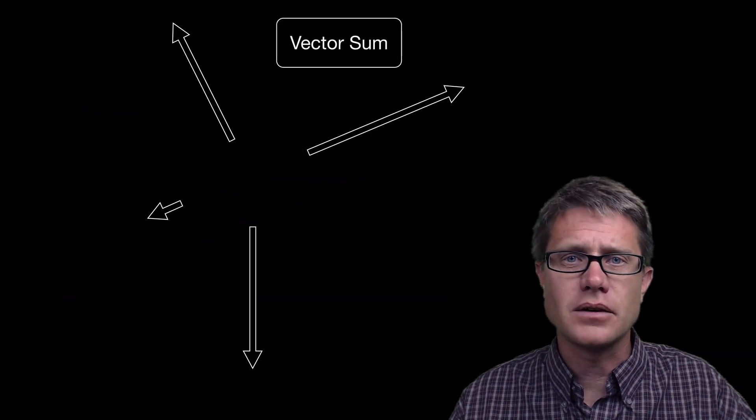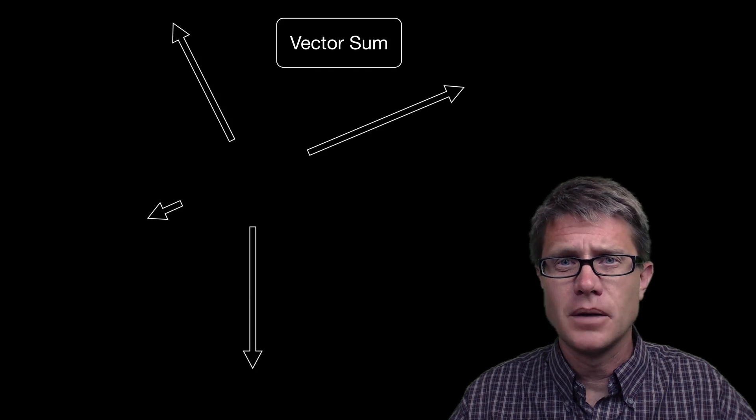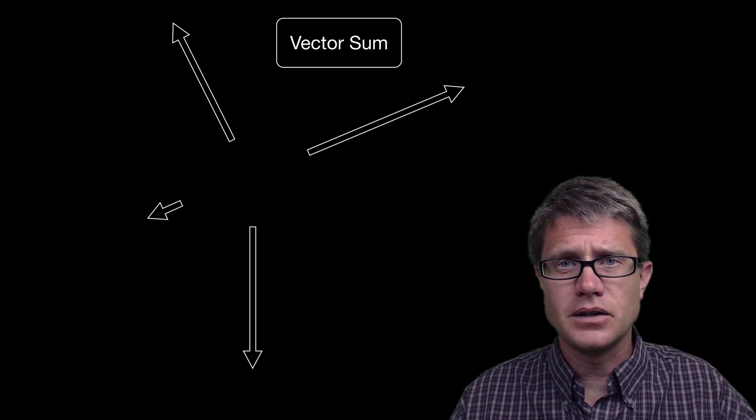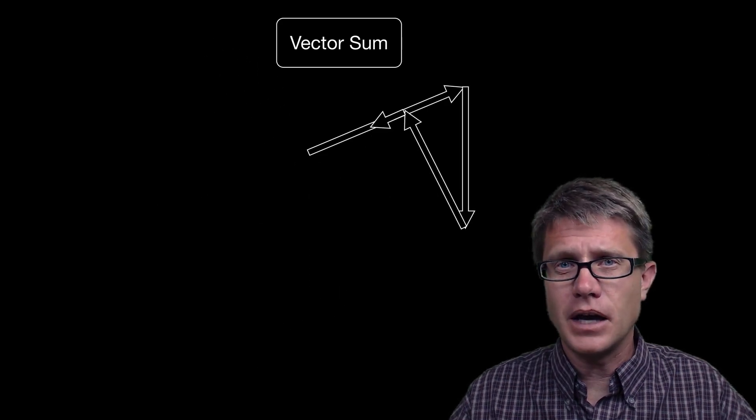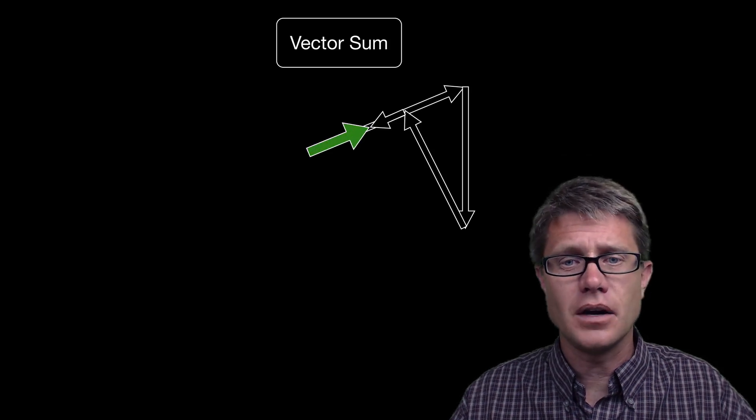So what you do is you take all of those forces and then we have to make a vector sum. Now remember to add vectors, it is ok to move them, but you have to keep their magnitude and their direction the same. And so I am going to line them up from tail to tip, to tail to tip, to tail to tip, to tail to tip. And if you go from the tail of the first vector to the tip of the last one then you get the vector sum.